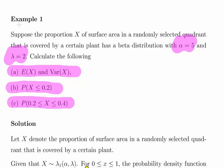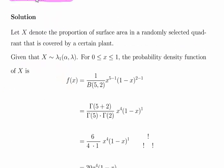So x follows a Beta Type 1 distribution with parameters alpha and lambda, for 0 ≤ x ≤ 1. With alpha equal to 5 and lambda equal to 2: x to the power of alpha minus 1 is x to the power of 4, since 5 minus 1 is 4. And 1 minus x to the power of lambda minus 1 is simply 1 minus x to the power of 1, since 2 minus 1 is 1.